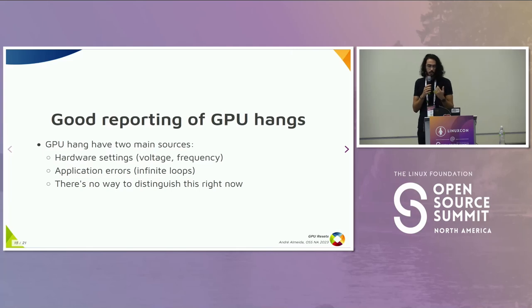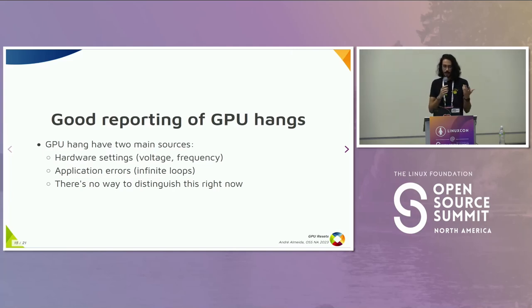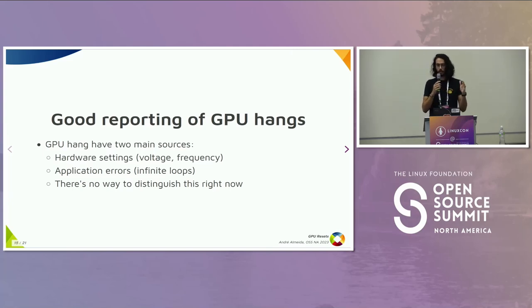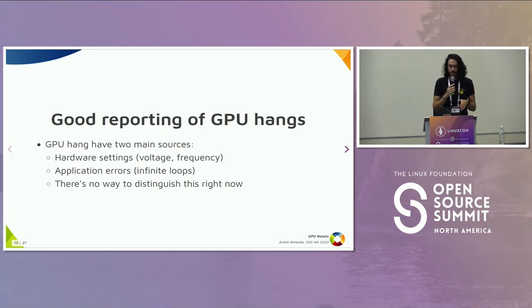GPU hangs have two main sources on AMD. It can be hardware settings — if you change the voltage or the frequency of the GPU in a bad way, it can hang the GPU. And of course, application errors like infinite loops. Right now there's no way to distinguish one from the other, which is really bad — because if you submit a bug report for a game, it might not be the game itself that crashed, but something else that decided to change the GPU frequency.